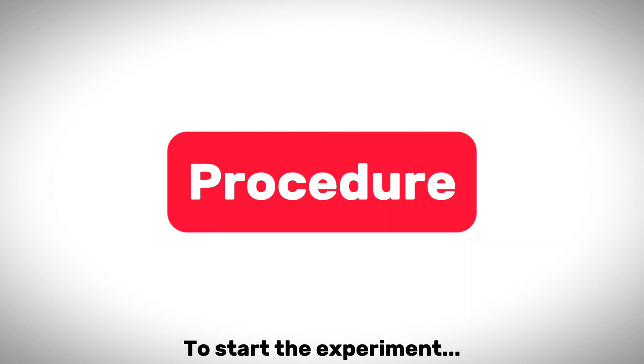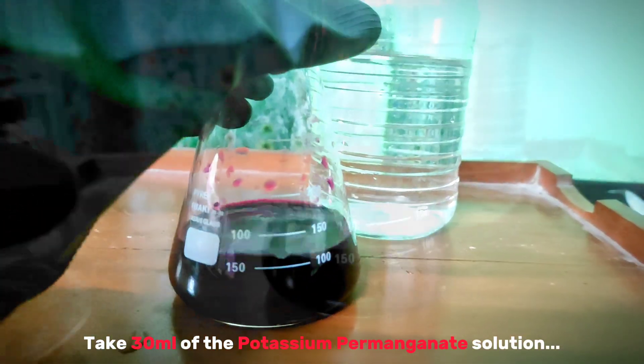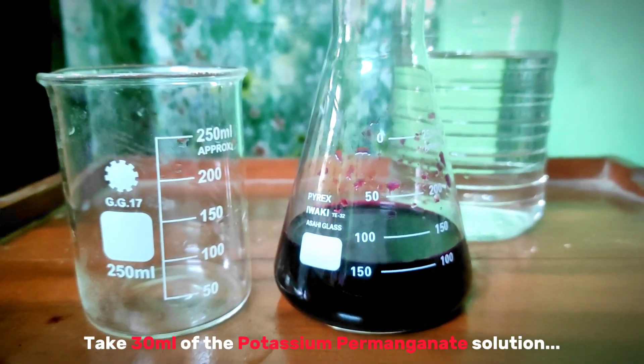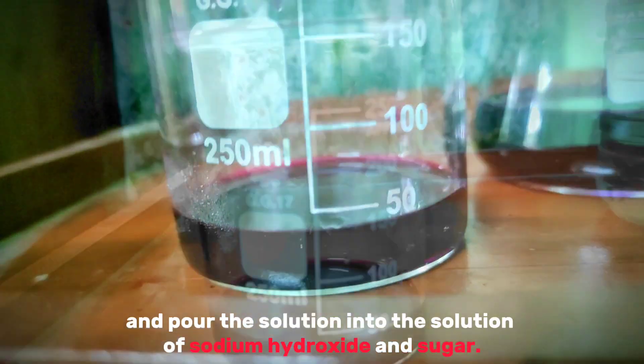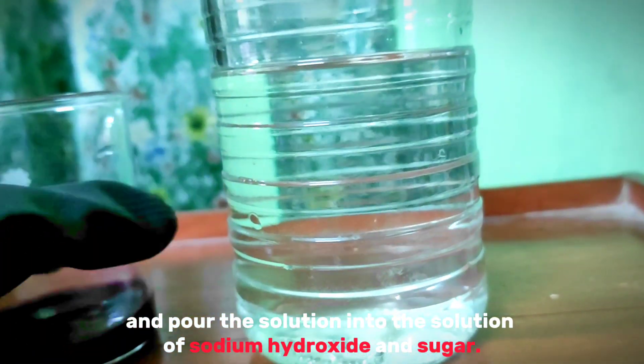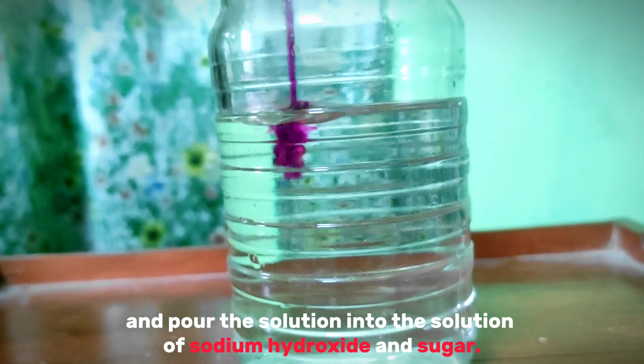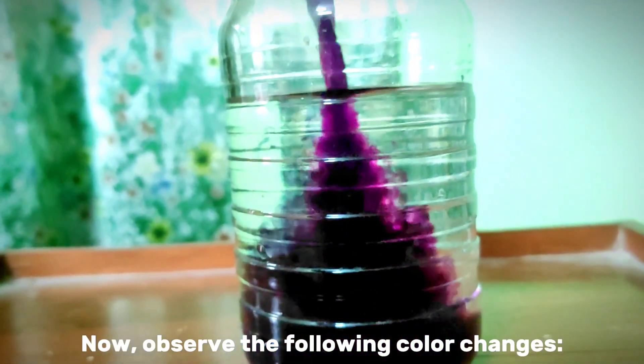To start the experiment, take 30 ml of the potassium permanganate solution into a beaker and pour the solution into the solution of sodium hydroxide and sugar. Now observe the following color changes.